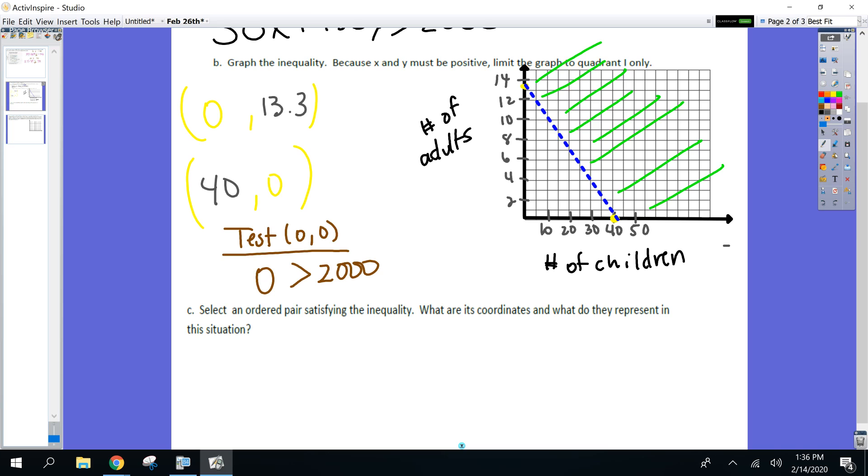Now we've got part C. Can anybody give me a nice ordered pair, an XY point that's in that inequality? 50, 2. And what's that mean? 50 kids and two adults will overload the elevator. I feel like 40 kids would also overload the elevator. It would. 40 and 6 adults.